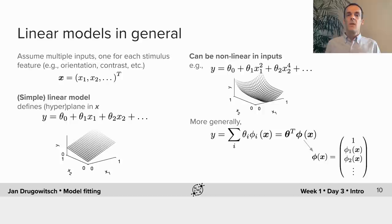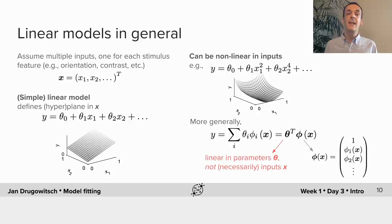When you use built-in functions to fit these models, some automatically include this 1 and others don't — that's something to be careful about. Overall, linear models are models that are linear in their parameters but don't need to be linear in the inputs. This feature makes them a very powerful and useful class of models that you will see over and over again in this course. This completes part one of the introduction.